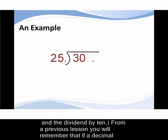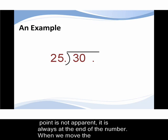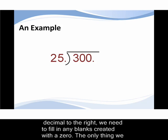From a previous lesson you will remember that if a decimal point is not apparent it is always at the end of a number. When we move the decimal point to the right we need to fill in any blanks created with a zero.